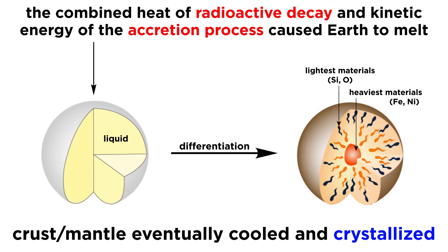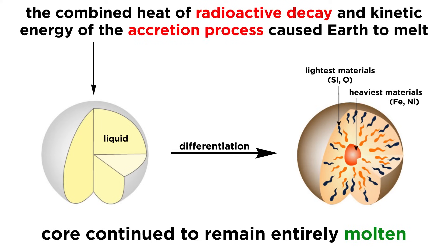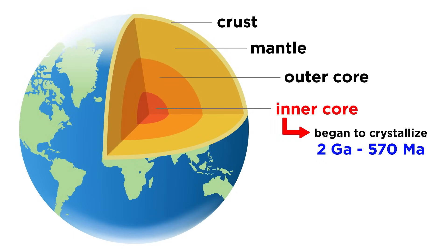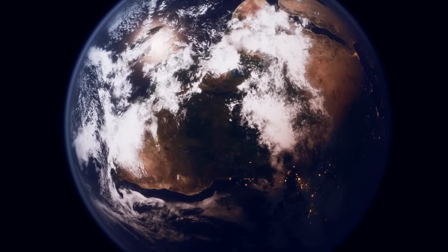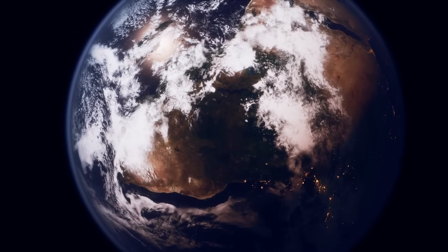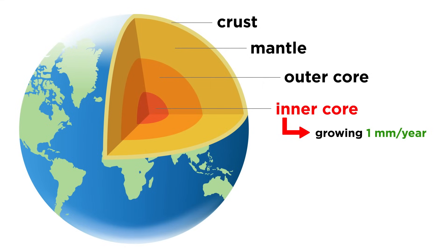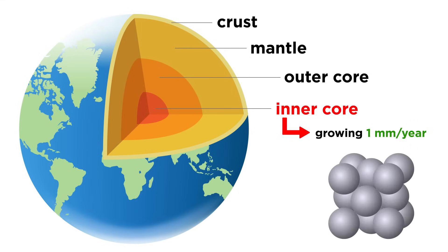Eventually Earth cooled enough to where the crust and mantle crystallized, with the core remaining entirely molten for a long period of time. The start of crystallization of the inner core is debated, with estimates ranging from about 2 billion to 570 million years ago. Earth has been cooling, radiating its heat to space since its formation. At the moment, the inner core is growing at a rate of a millimeter per year, as the liquid iron in the outer core solidifies, forming new crystals of solid iron.